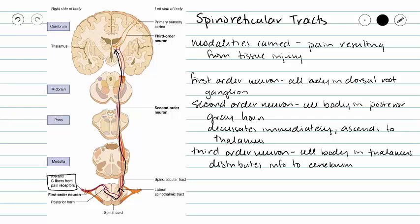Our third order neuron is going to distribute this information to our cerebrum. In this picture it shows the primary sensory cortex, but that's not actually what happens because remember you don't have a map of your organs on your brain. So let's look at a better picture.